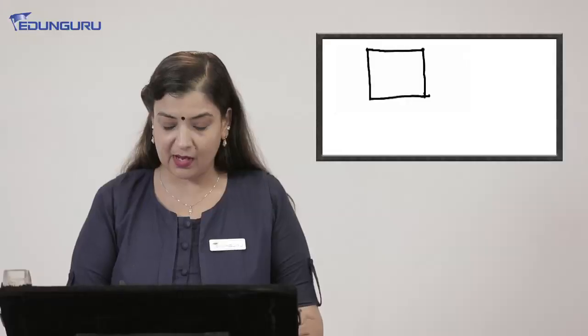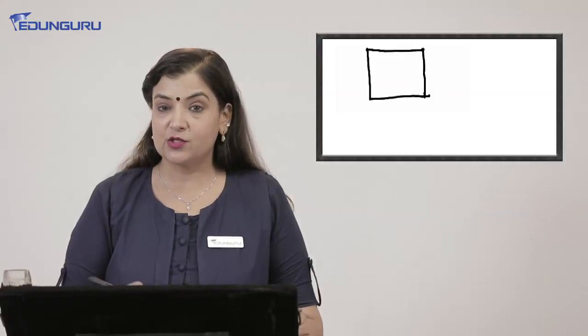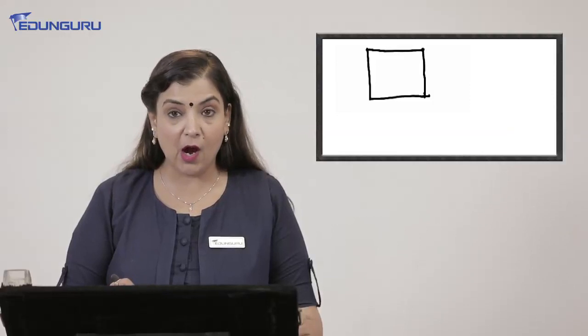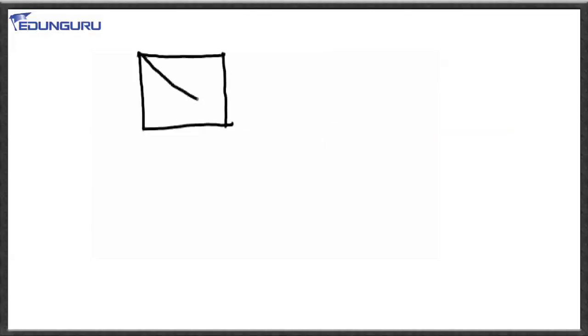Now, let us understand with the help of an example. Here students, I have drawn a square. As you know, square has four sides. Square is a regular polygon. All the sides are equal. Now, let us find out how many lines of symmetry are there. One, if I join two diagonals, here one another line of symmetry, here again third line of symmetry. Then, if I draw a line horizontally, a line of symmetry is there. So it has four lines of symmetry.